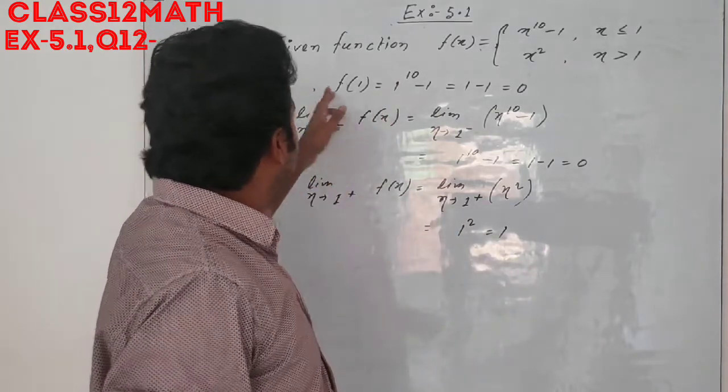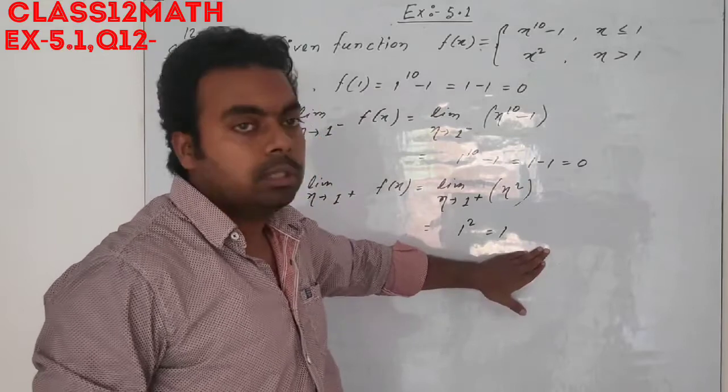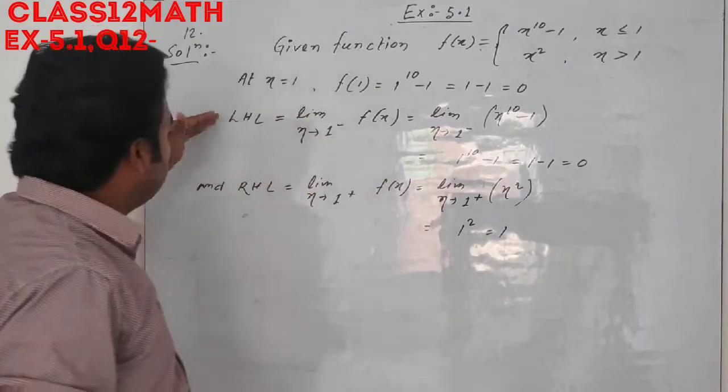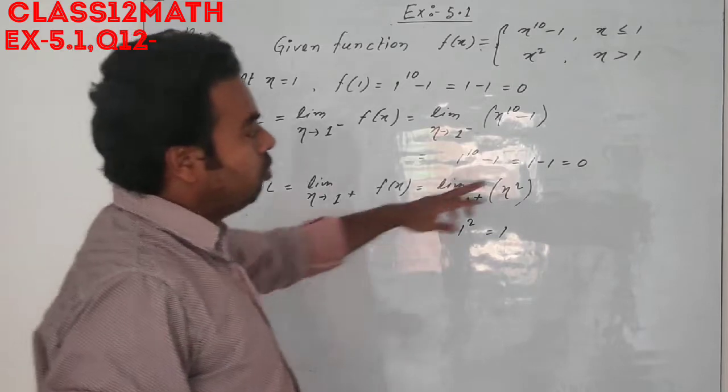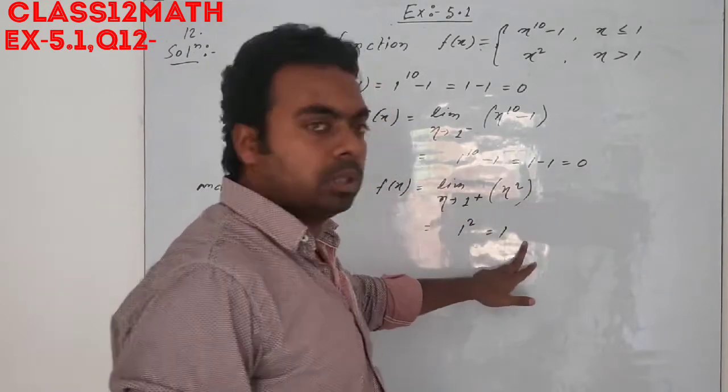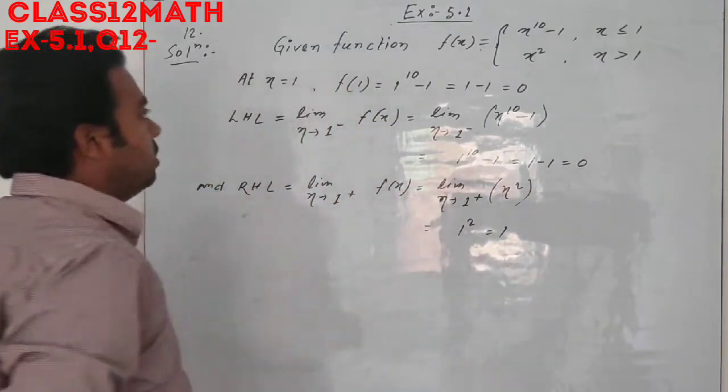But we can see that left-hand limit and right-hand limit are different—one is zero and the other is one. This means the function is discontinuous.